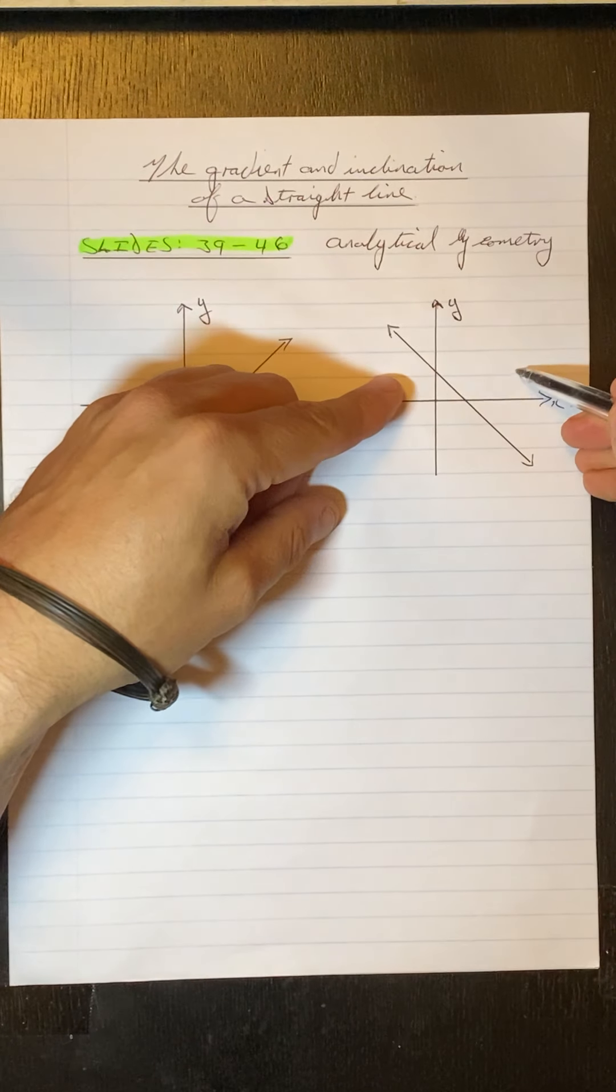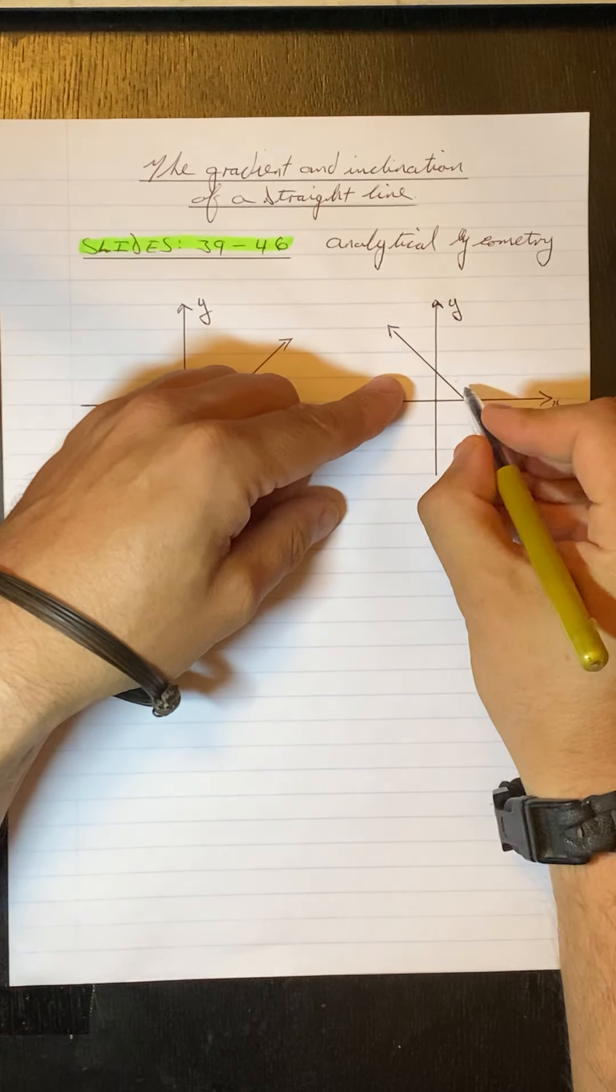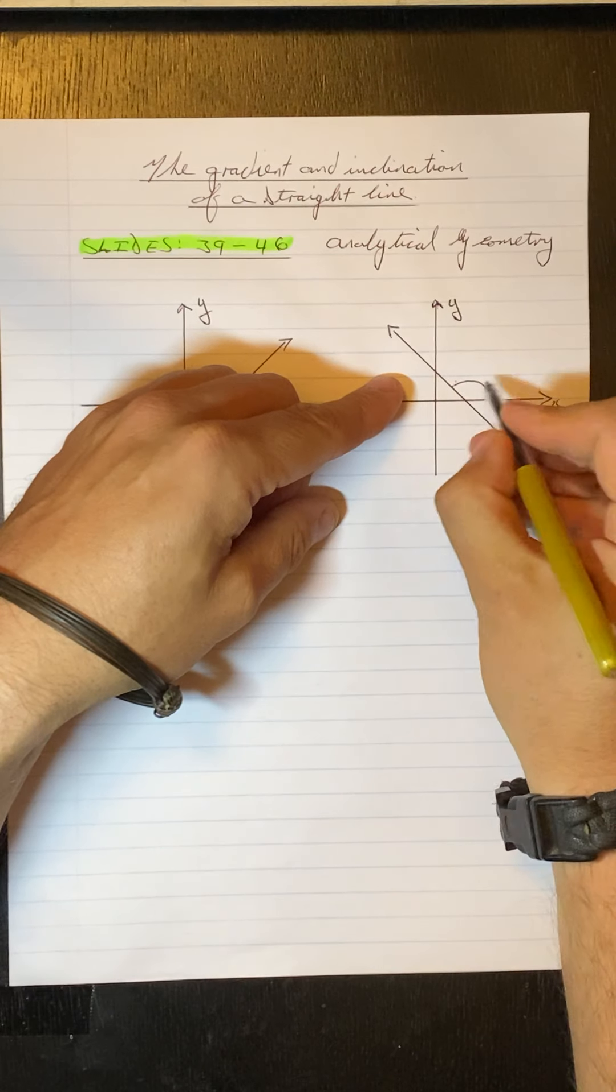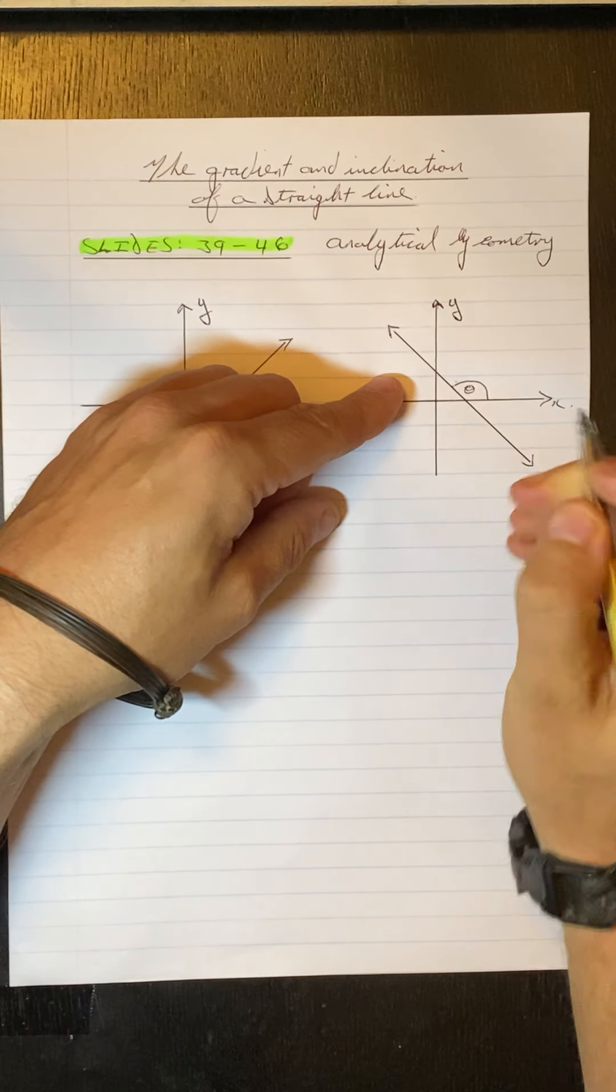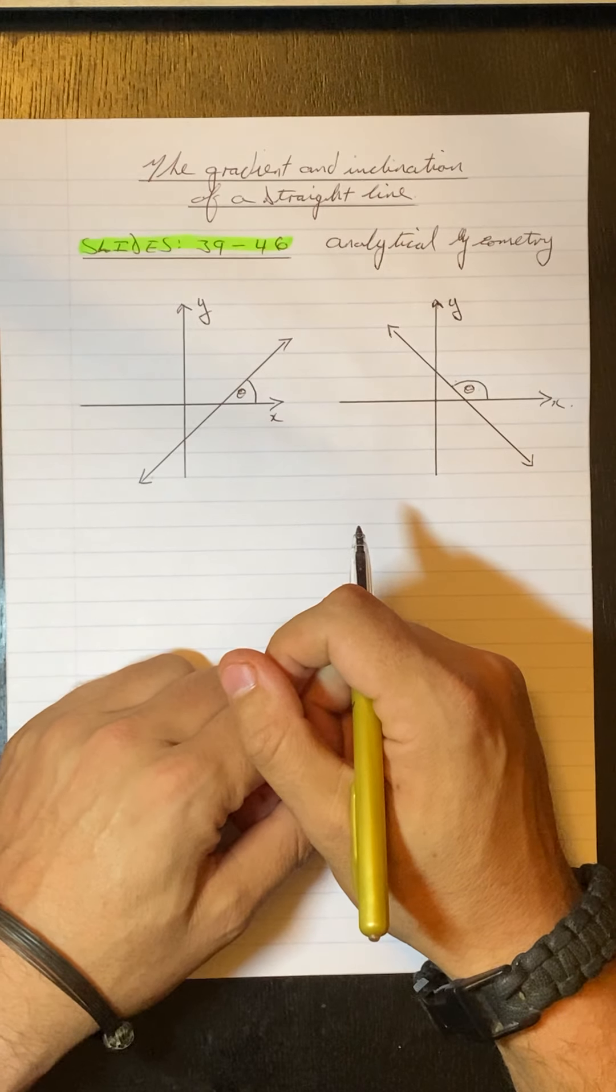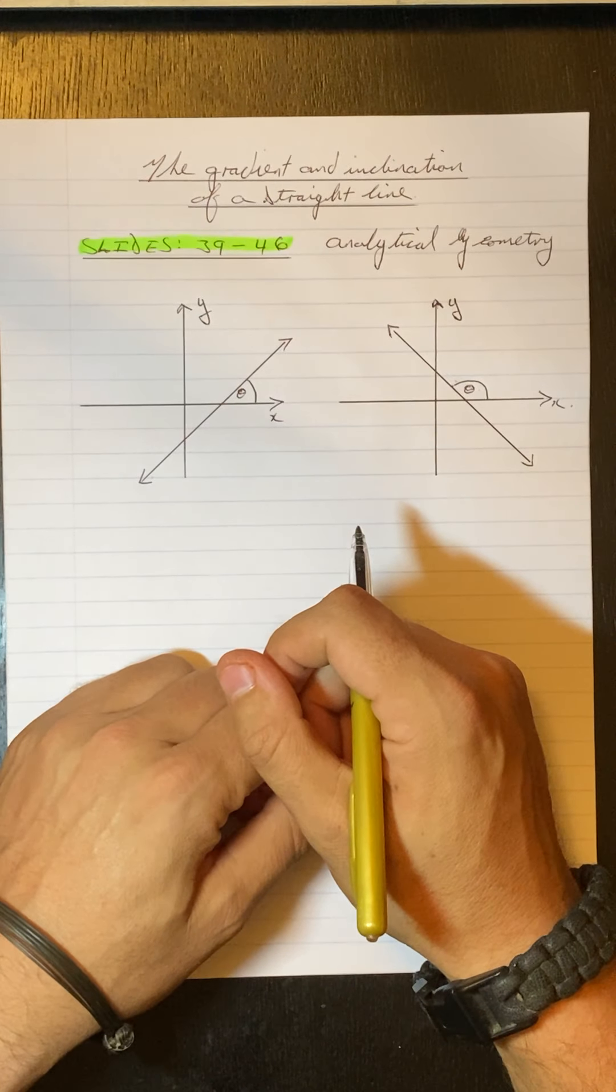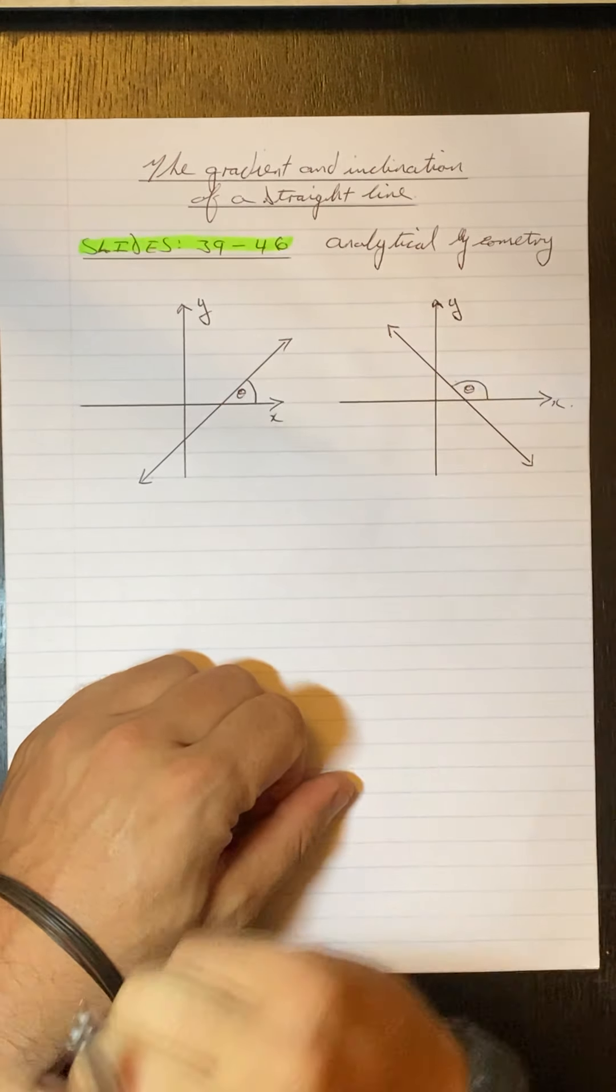Likewise with this one, at the top of the x-axis, on the right of the straight line. That is your angle of inclination. And all it means is it means what is the angle between the x-axis and the straight line.